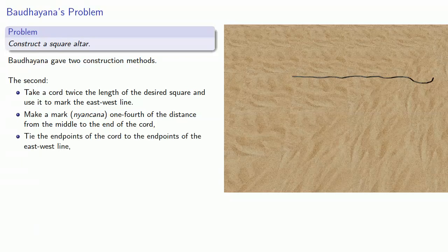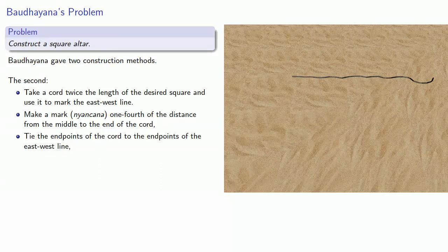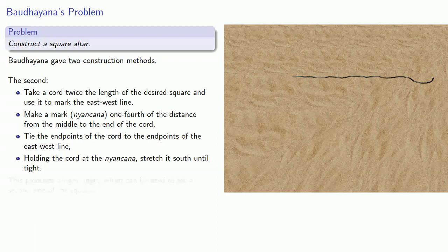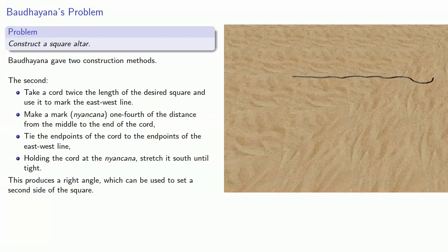Then, tie the endpoints of the chord to the endpoints of the east-west line. And, holding the chord at the nyankana, stretch it south until tight. This actually produces a right angle, which could be used to set a second side of the square.